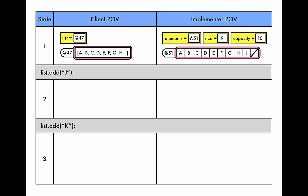But from the implementer's perspective how do we handle this? How is the state going to change? Do the variables change? Does the array object change? Please pause the video and try to figure out how the implementer's state changes when we add J to the end of the list.